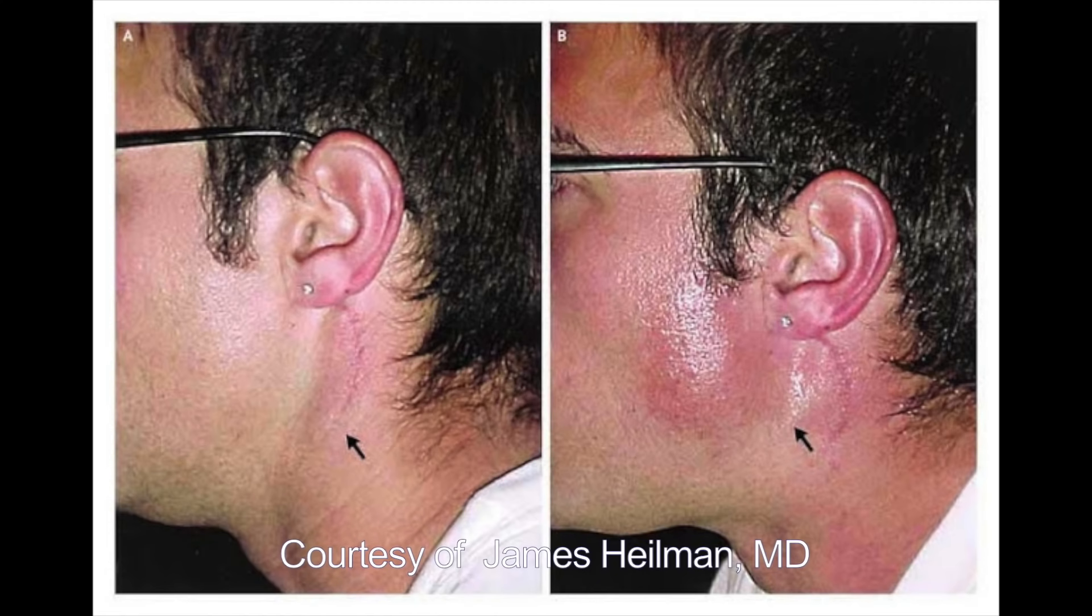Here is a photograph of a person that has had a left parotidectomy, as seen by the scar. When this person eats, he has gustatory sweating where you have flushing as well as sweating on the affected side. This is due to injury to the auriculotemporal nerve, a branch of the trigeminal nerve. This condition is called Frey's syndrome.